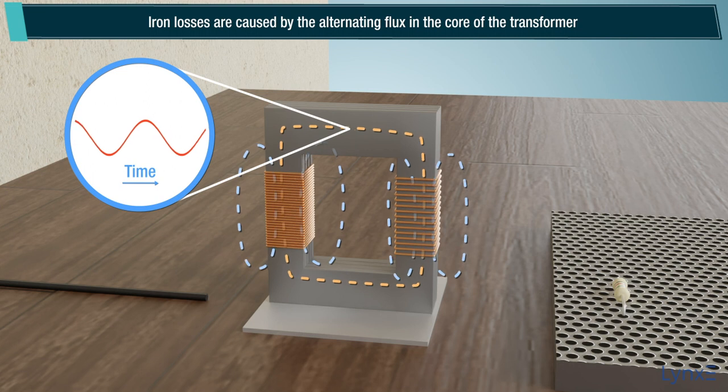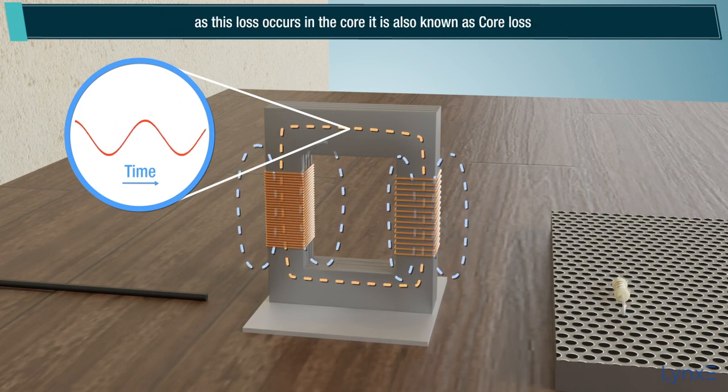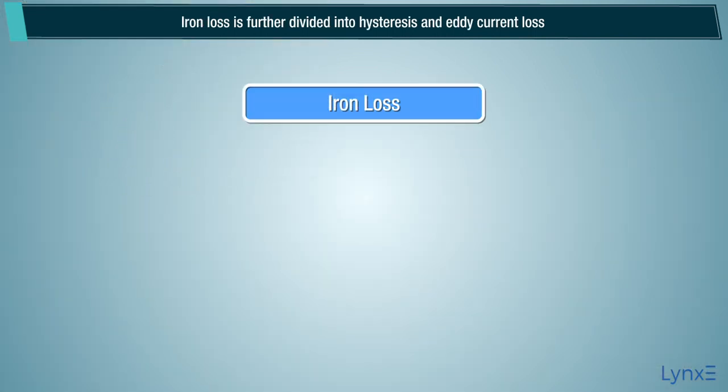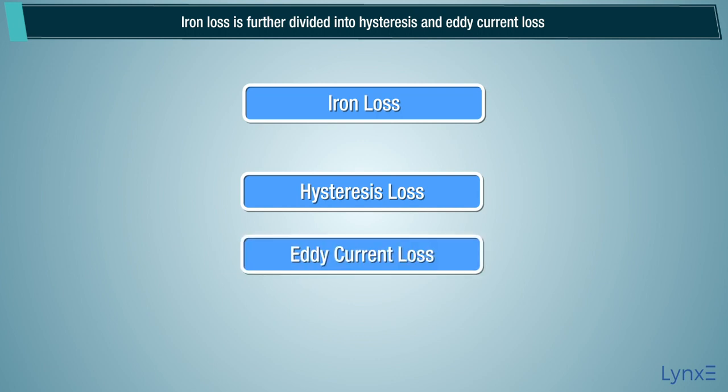Types of losses in the transformer: Iron losses. Iron losses are caused by the alternating flux in the core of the transformer. As this loss occurs in the core, it is also known as core loss. Iron loss is further divided into hysteresis and eddy current loss.